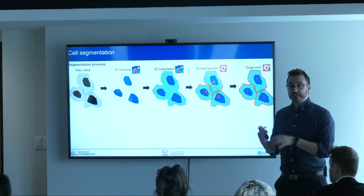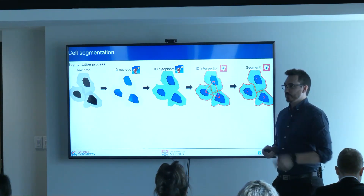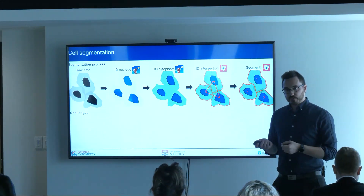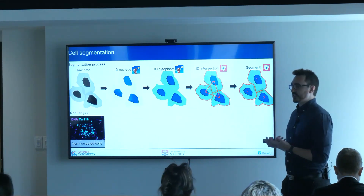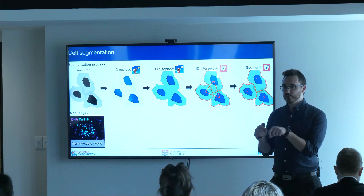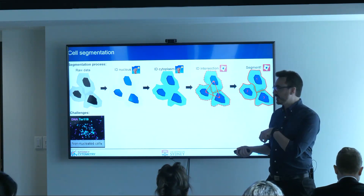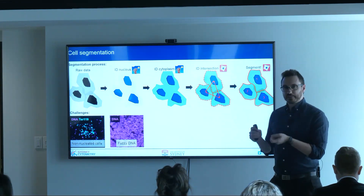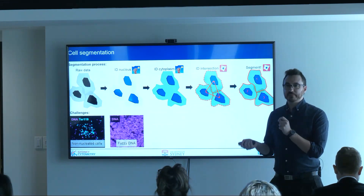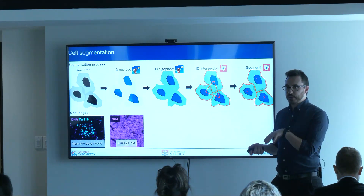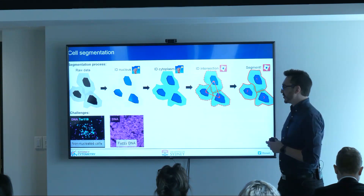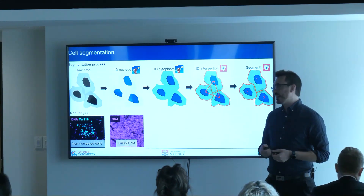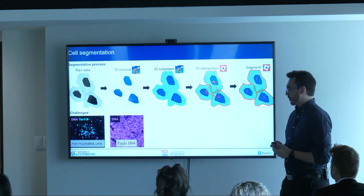The idea is we can segment the image into single cells, which is very helpful. But there are some challenges. If we have non-nucleated cells, any nucleus-based approach just falls apart — red blood cells, for example, or things like fuzzy DNA. If people are working in frozen sections, particularly in mouse tissues, we get this mess of nuclei which don't actually show up at all.